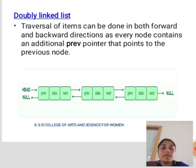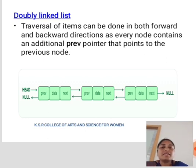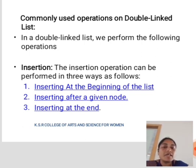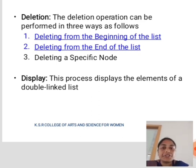Next one is a doubly linked list. Transfer of items can be done in both forward and backward directions as every node contains an additional previous pointer that points to the previous node. This is the diagram for the doubly linked list. Commonly used operations of the doubly linked list: First is insertion. The insertion operation can be performed in three ways — inserting at the beginning of the list, inserting after a given node, and inserting at the end.